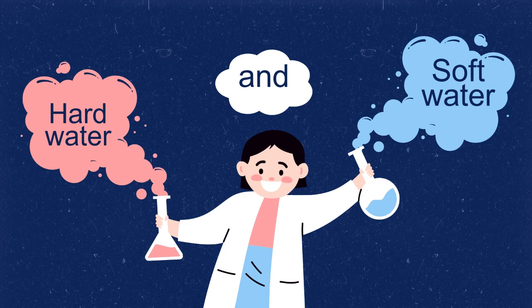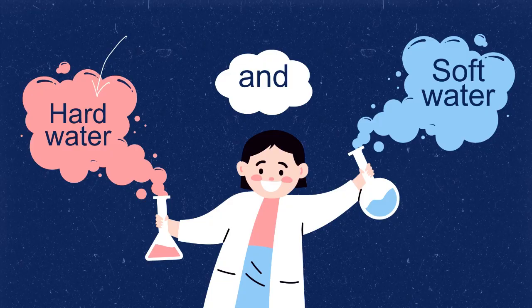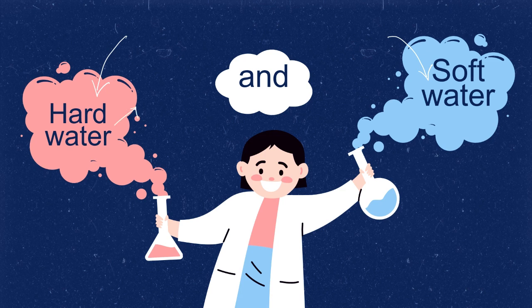There are two kinds of water: hard water and soft water. Hard water is which does not lather with soap, and soft water is which lathers with soap. If you have this kind of water, you will have dull hair and stained utensils.